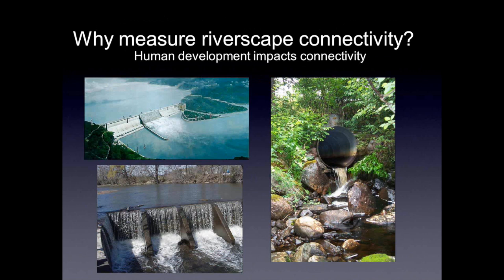Barriers can affect dispersal, which in turn can affect population sizes, potentially contributing to extinction risk. There might be changes in genetics, and on and on. Cumulatively, all these things might affect the ecological integrity of a watershed in its entirety. Ecological integrity is something that Parks Canada has been concerned about, and that's really where this research has its origin.